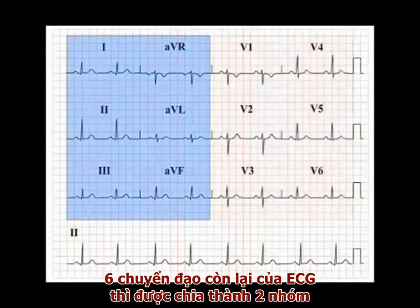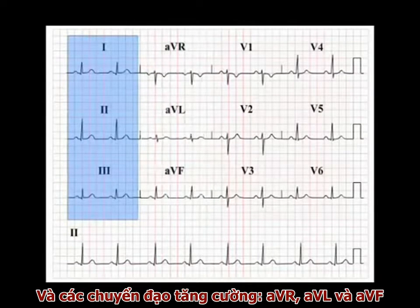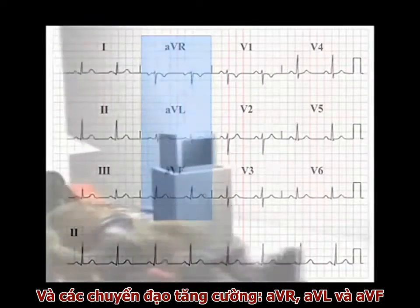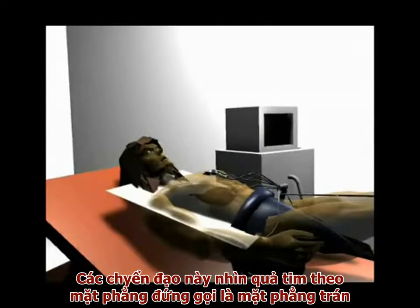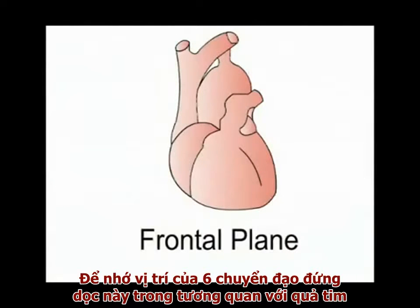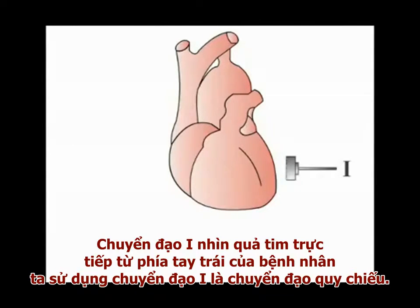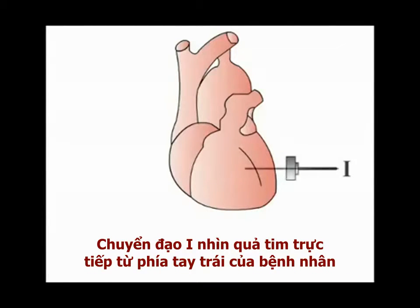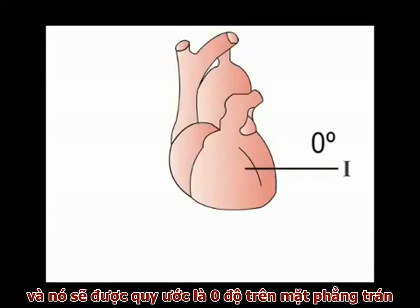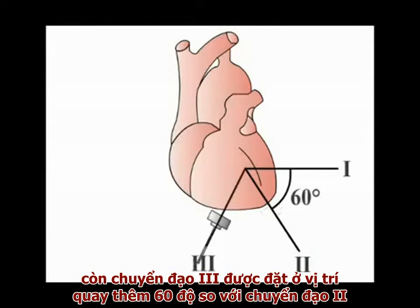The remaining six ECG leads we can consider in two groups: the standard leads — leads 1, 2, and 3 — and the augmented leads, AVR, AVL, and AVF. This vertical plane is known in anatomical terms as the frontal plane. To remember the position of all six of the vertical leads relative to the heart, use lead 1 as your reference point. Lead 1 looks directly at the heart from the patient's left-hand side and defines 0 degrees in all further discussions of the frontal leads. Lead 2 looks at the heart at an angle 60 degrees further clockwise, while lead 3 is positioned a further 60 degrees clockwise from lead 2.